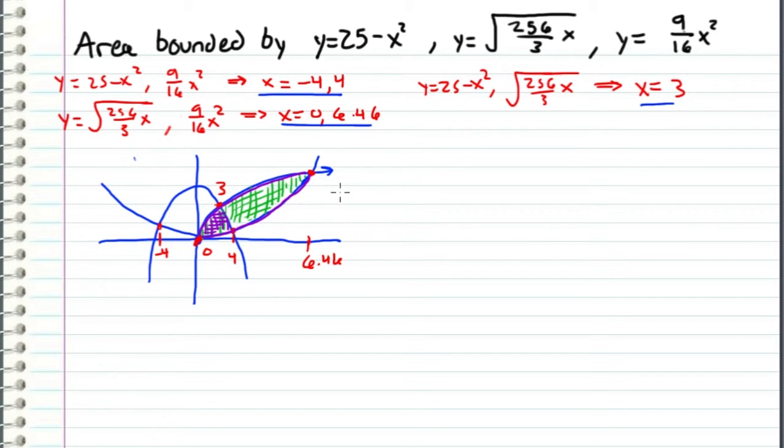Otherwise, this green area just becomes the integral from 0 to 6.46 of the square root of 256 over 3x minus 9 sixteenths x squared dx. And then we just evaluate that and we're done. And we don't even have to deal with this parabola right here. So instead of doing that, I'm only going to consider this shaded area that I have in purple right here.